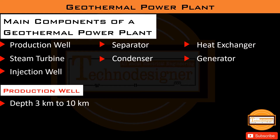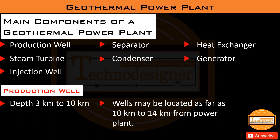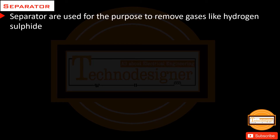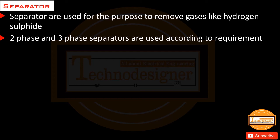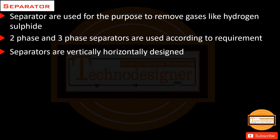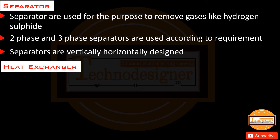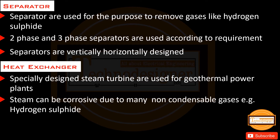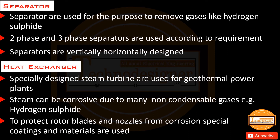The depth of a production well is from 3 km to 10 km, and wells may be located as far as 10 to 14 km from the power plant. Separators are used to remove gases like hydrogen sulfide; 2-phase and 3-phase separators are used according to requirement, and they are designed both vertically and horizontally. Specially designed steam turbines are used for geothermal power plants, as steam can be corrosive due to non-condensable gases such as hydrogen sulfide, requiring special coatings and materials on rotor blades and nozzles.